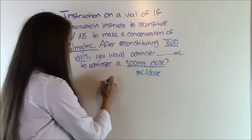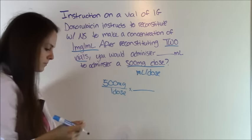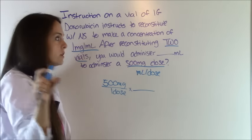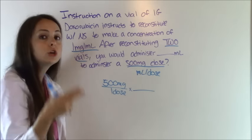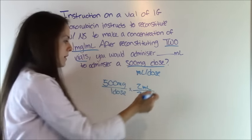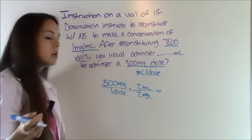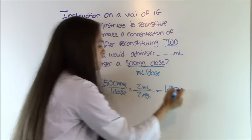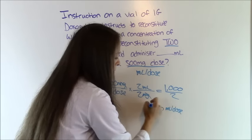Let's plug this in. The doctor ordered 500 milligrams per dose, trying to get to milliliters per dose. The concentration is 1 milligram per milliliter per vial, but since we used two vials, we double it: 2 milligrams equals 2 milliliters. Milligrams cancel out and we have milliliters per dose. 500 times 2 equals 1,000. 2 times 1 equals 2. 1,000 divided by 2 equals 500. The answer is 500 milliliters per dose.